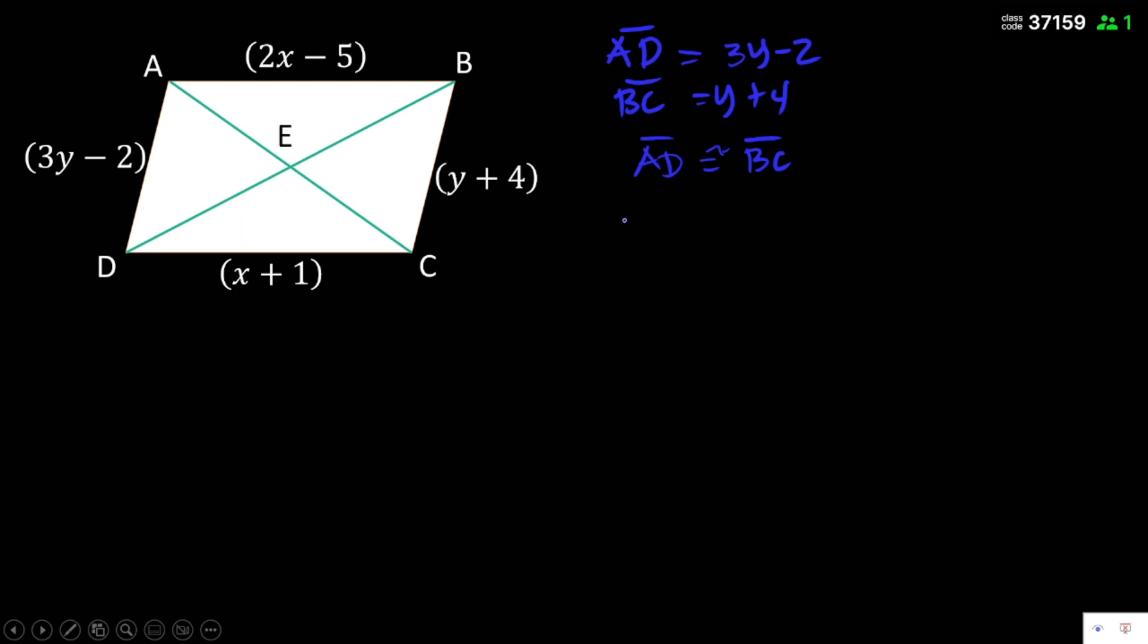So, meron tayong may equation na 3y minus 2 is equal to y plus 4. Then, solve for y, lipat natin yung 2 since negative, maging positive ito yan. And, yung y, lipat din natin doon, positive change to negative. 3y minus y is equal now to, or plus 2 is 6. Then, 3y minus y is 2y is equal to 6. Divide by 2, divide by 2. Then, y, cancel dito, is equal to 3.